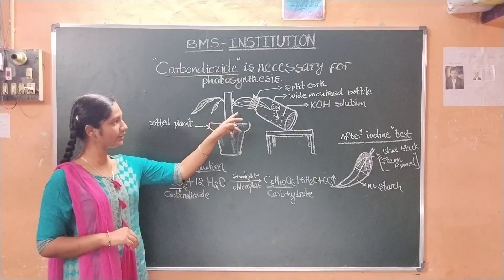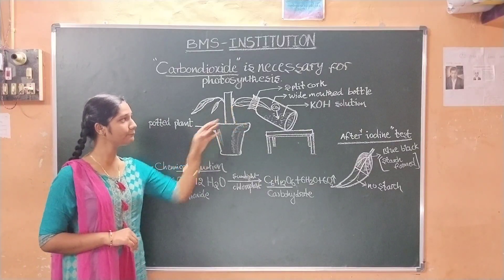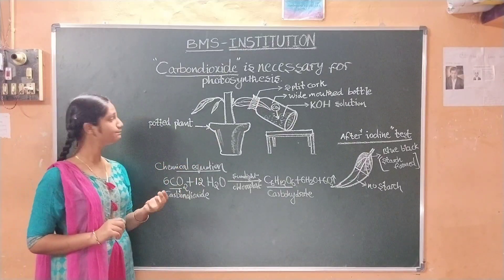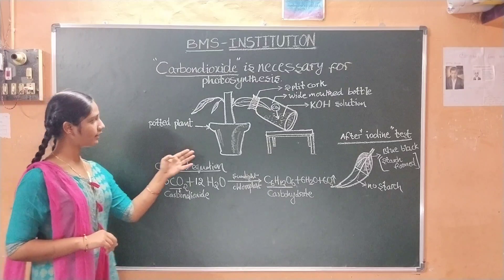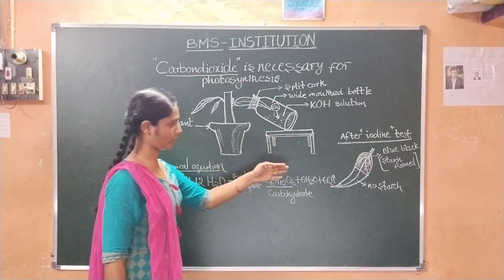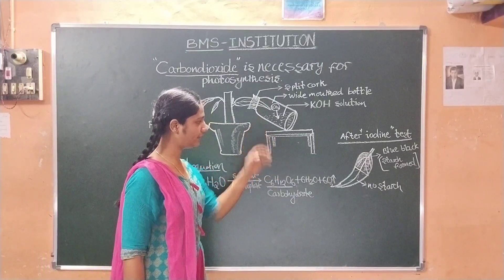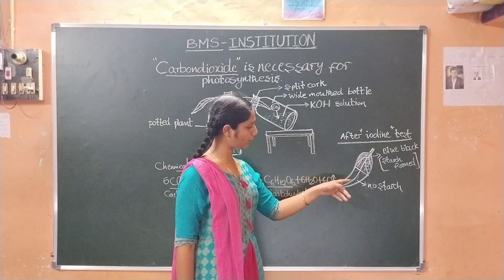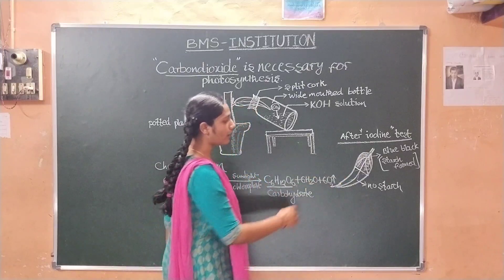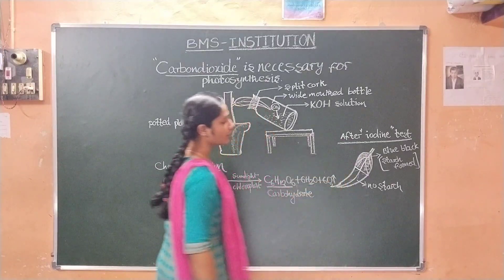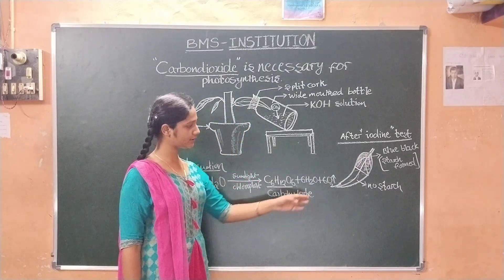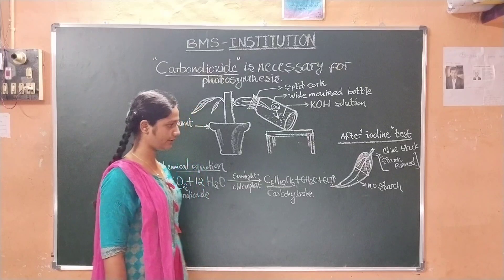Another important thing is when we take this leaf out, we should not touch it with our hand because it is harmful. Keep this arrangement in the presence of sunlight for four to five hours. Then take the leaf out of the wide-mouthed bottle. Now take two to three drops of iodine solution and pour them onto the leaf. When starch is present, the color of the leaf changes to a bluish-black color. Where there is no starch, it does not change color and will remain colorless.